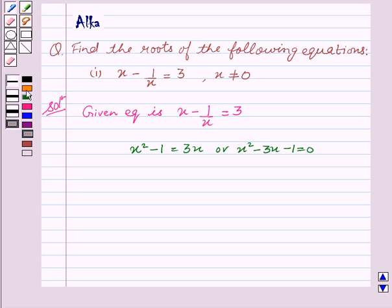On comparing it with ax square plus bx plus c equal to 0, we get a equal to 1, b equal to minus 3 and c equal to minus 1.